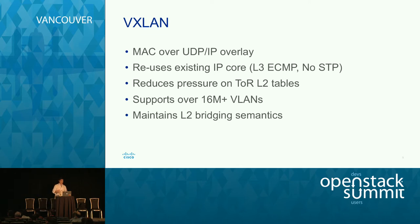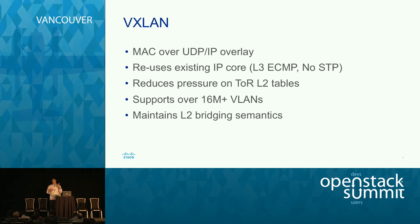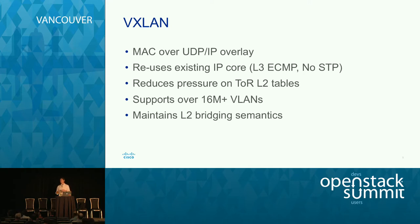VXLAN is basically a MAC-over-UDP/IP overlay network. It takes Layer 2 frames on a hypervisor or endpoint and encapsulates them in a UDP-over-IP packet. It reuses the existing IP core, so you get L3 ECMP. It reduces pressure on your top-of-rack L2 tables because switches see a single physical endpoint for tunnels, while multiple virtual endpoints are encapsulated within those tunnels. It also supports over 16 million virtual network IDs and maintains existing Layer 2 bridging semantics.